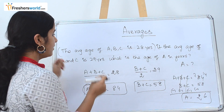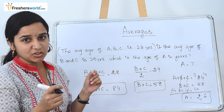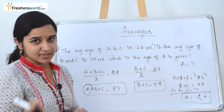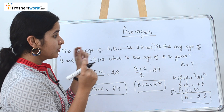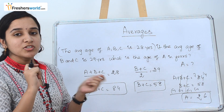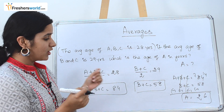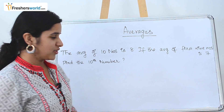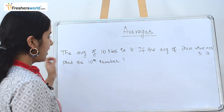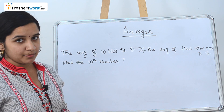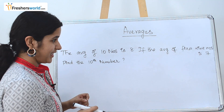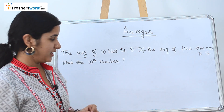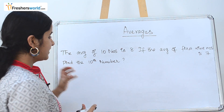So what did we do here? We split the question: first we took the total of A, B, and C, then the total of B and C. Once you subtract it, you got the value of A. Let's go to the next question. The next question is: the average of 10 numbers is 8. If the average of the first 9 numbers is 7, find the tenth number.